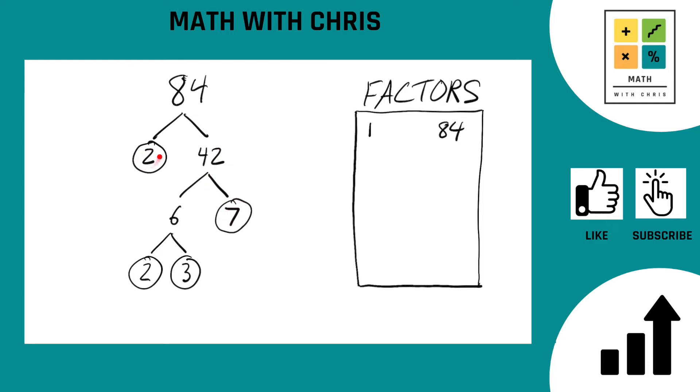The prime factors we found were we found a 2, found a 2, another 2, a 3, and a 7. So let's write those out. 2 times 2 times 3 times 7. And that does in fact equal 84 if you multiply them together. You can check that for yourself or take my word for it. It is correct, I promise you.